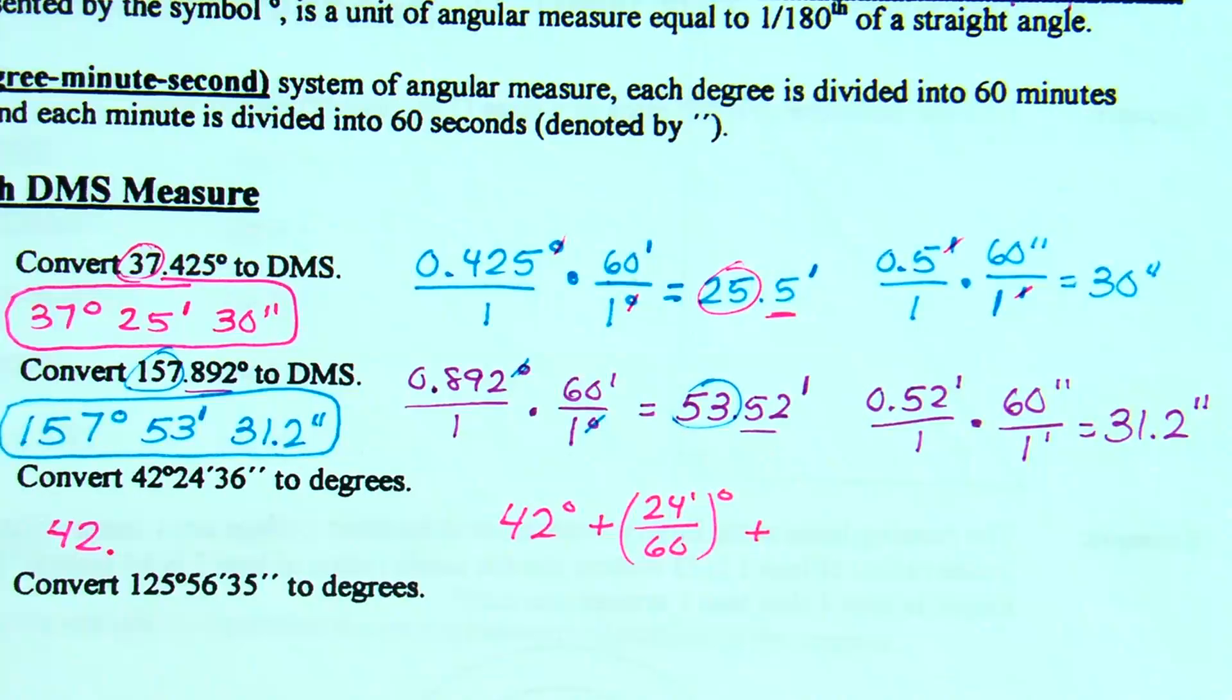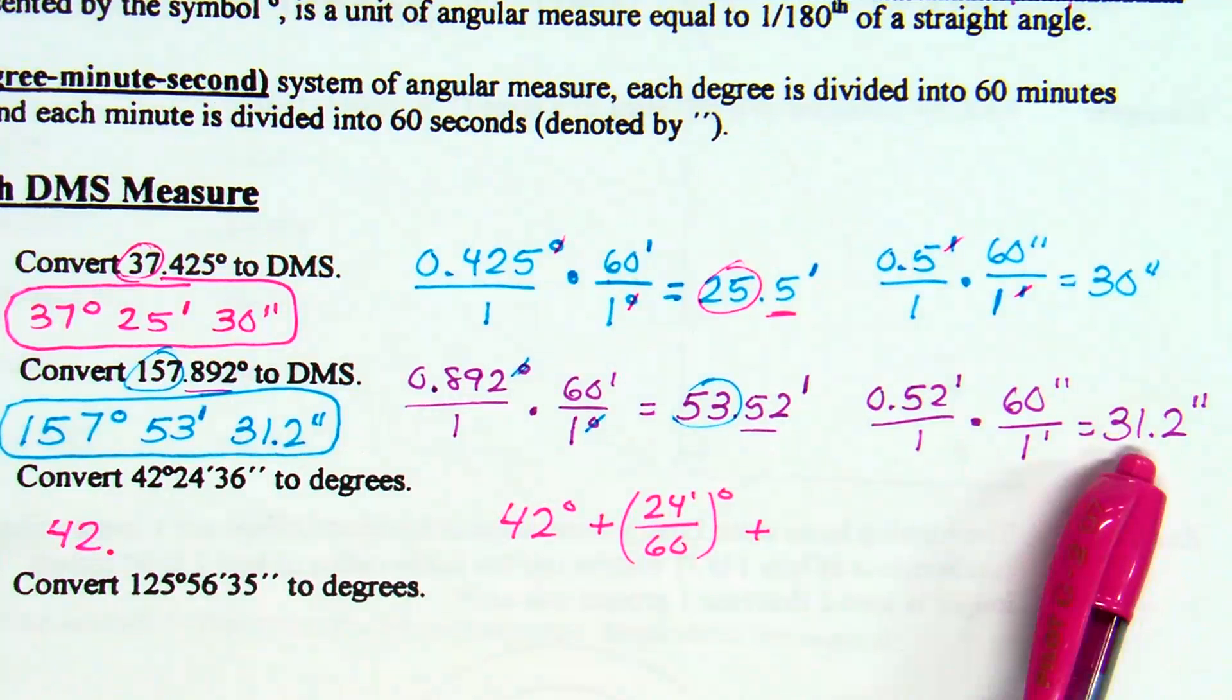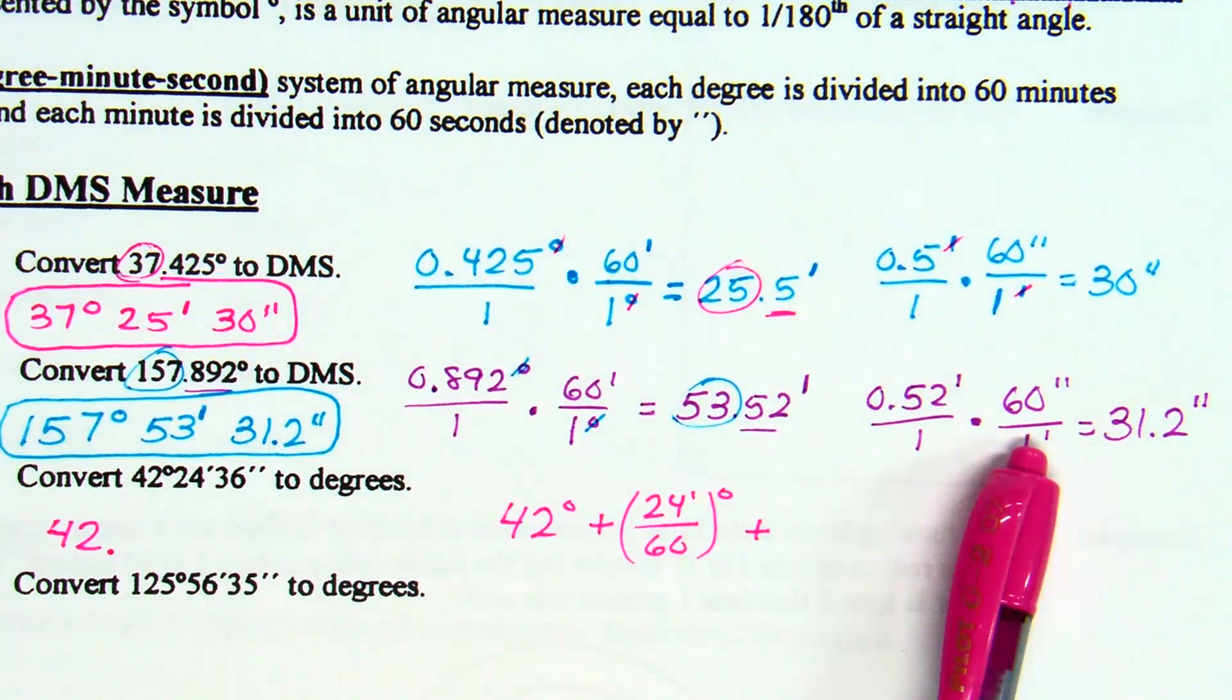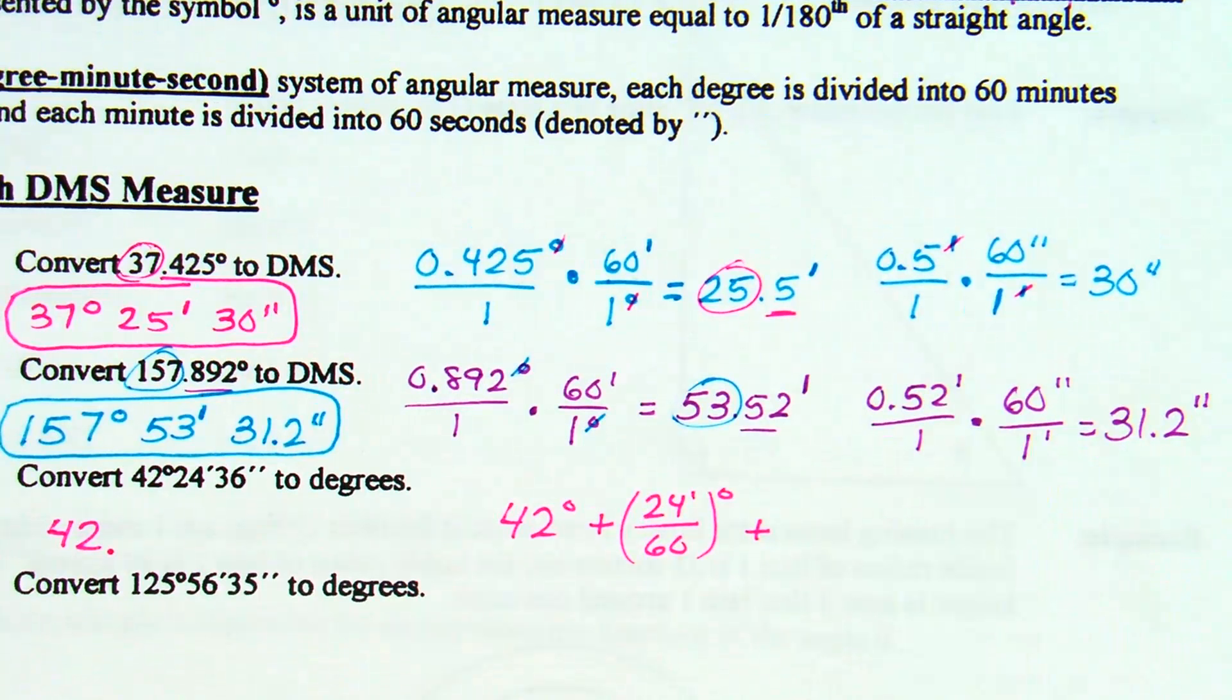Now what about that 36 seconds? We know we're going to have the 42 degrees initially. To take 24 minutes and turn it to degrees, we're going to have to divide by 60. And that will become degrees. Plus, now, what about that 36 seconds? Are we just dividing by 60 there? Think about it. How did we get this 31.2 originally in the previous problem? We had to multiply by 60 here, and then multiply by 60 again. So what do we have to do to get out of seconds?